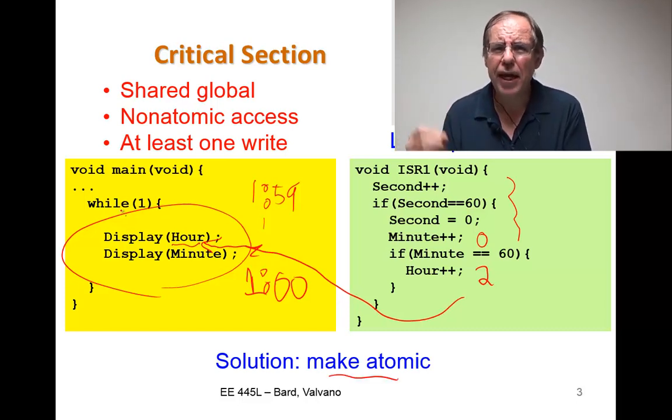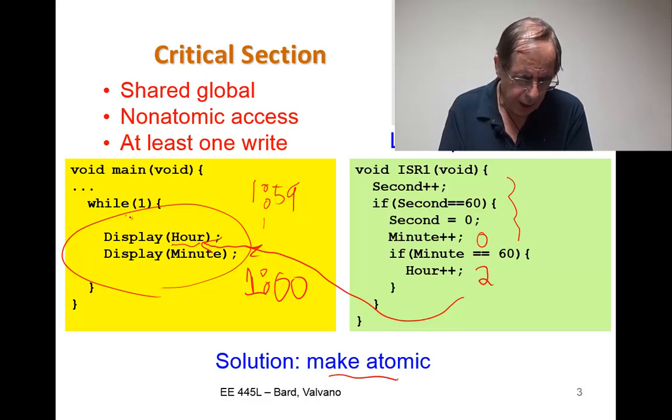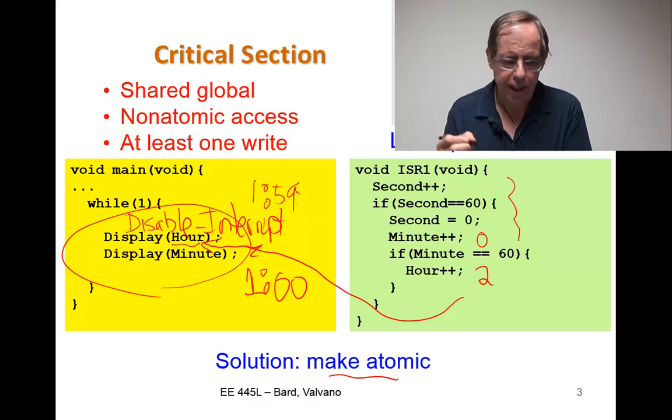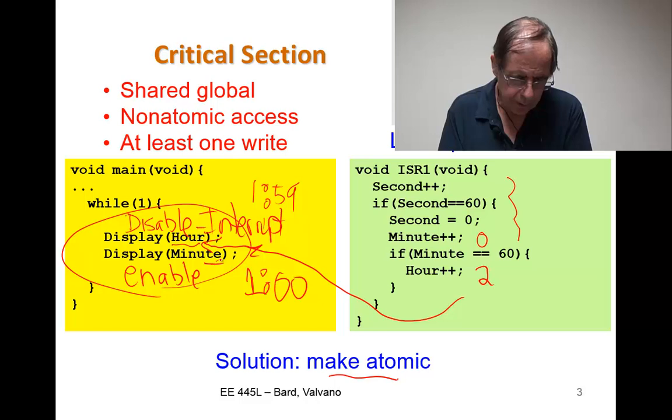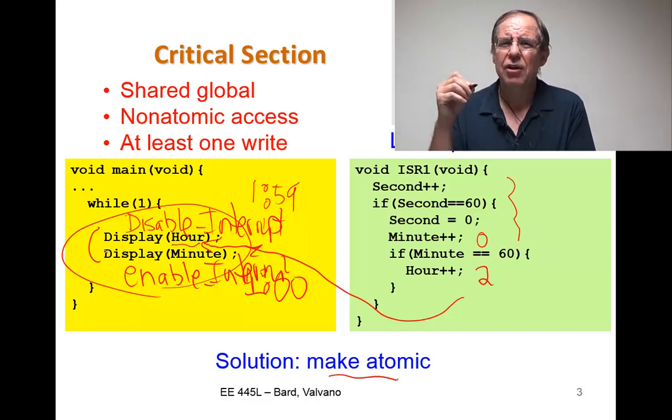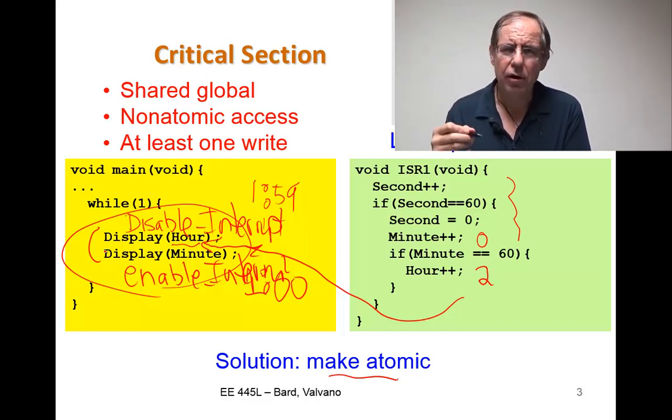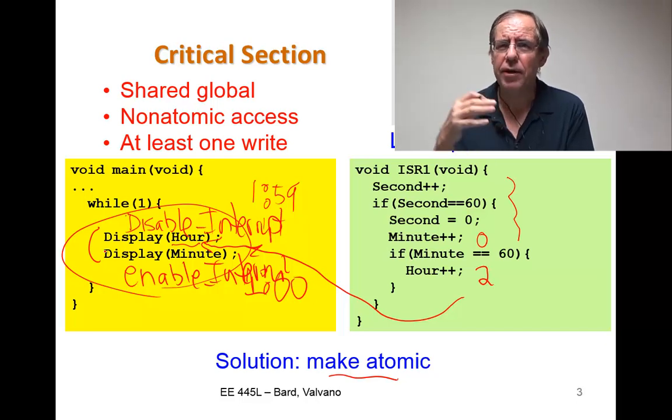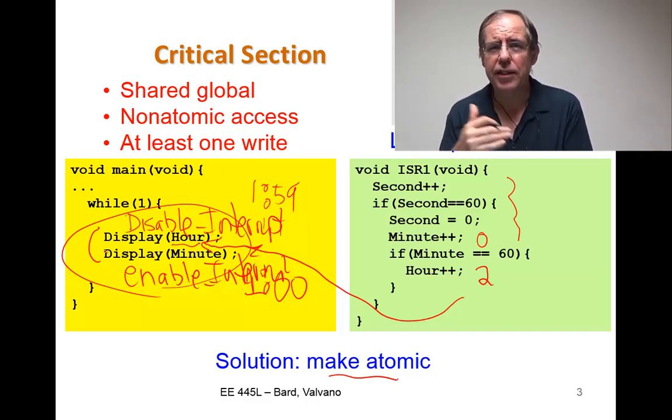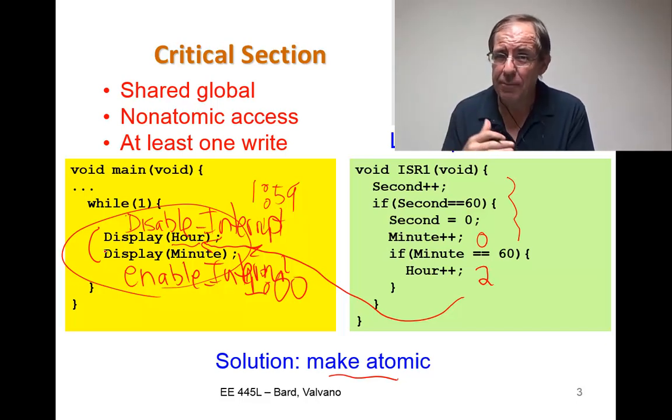So, this is an example of a multi-sequence read coupled with a write. So, the solution to this is to make it atomic. And the easy way here is to disable interrupts. So, if I disable interrupts before the critical section begins and I re-enable interrupts after, what will happen is this sequence of operations, this reading of the hour is going to be atomic with reading of the minute. And so, in this way, I've made the system atomic. Of course, I have disabled interrupts and that's generally a bad thing to do. And so, we're going to search for other ways to solve this problem.